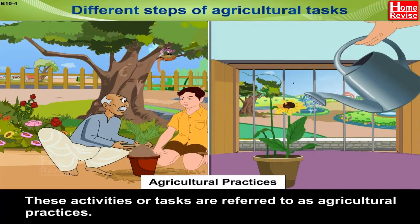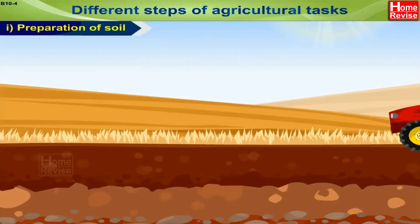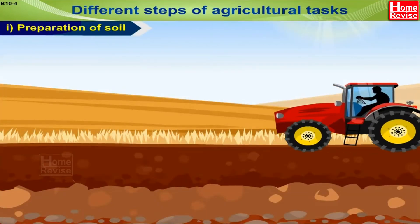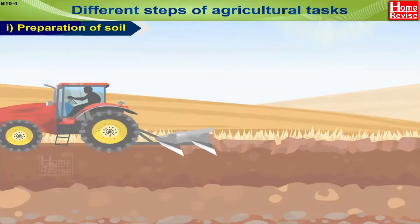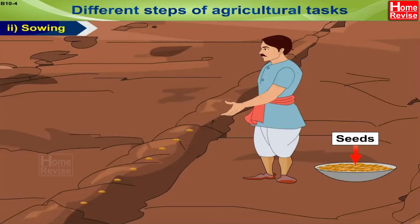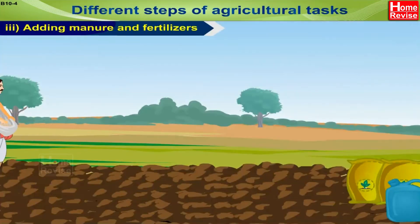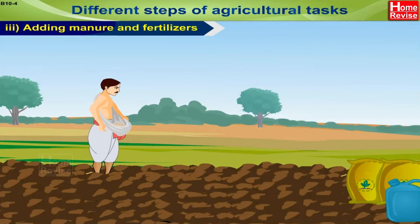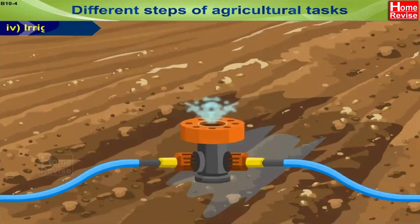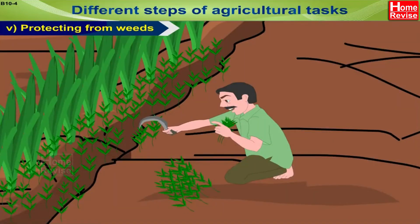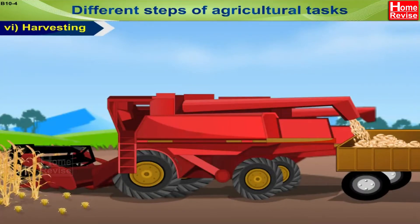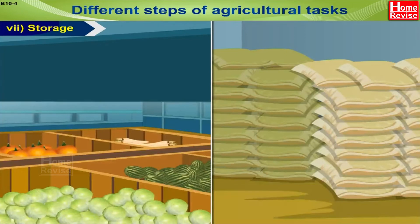The agricultural activities are: 1. Preparation of soil, 2. Sowing, 3. Adding manure and fertilizers, 4. Irrigation, 5. Protecting from weeds, 6. Harvesting, and 7. Storage.